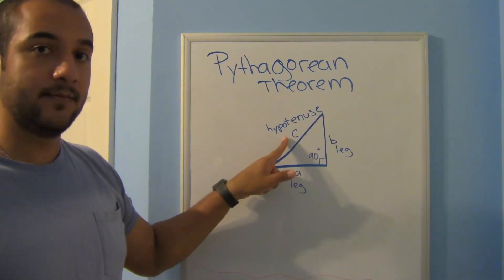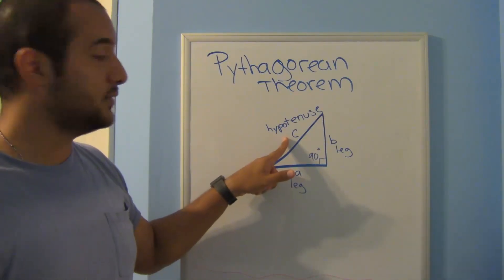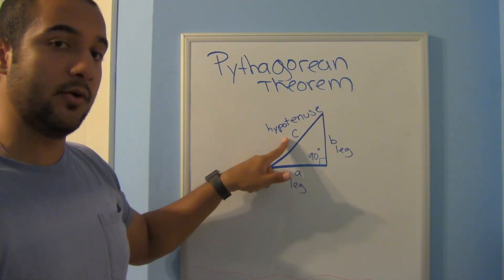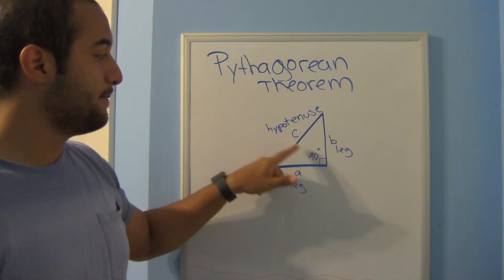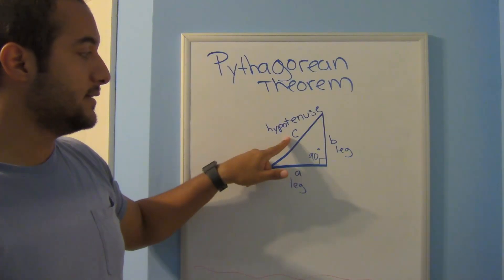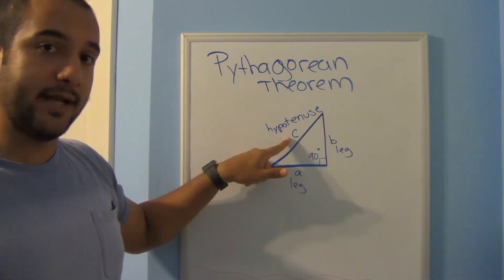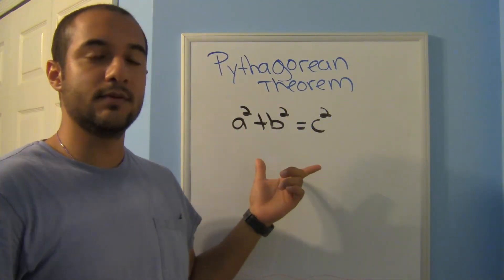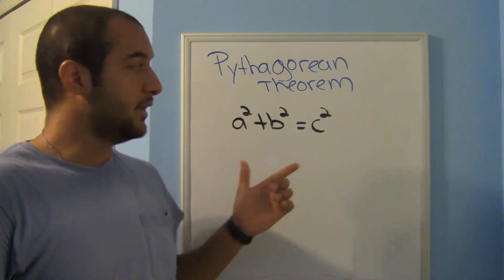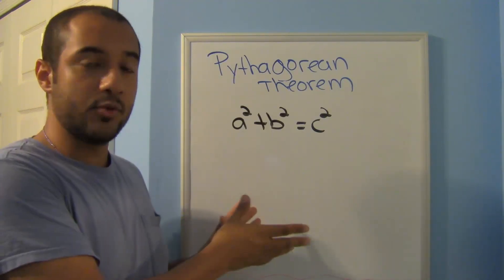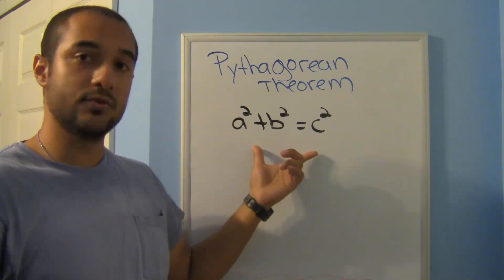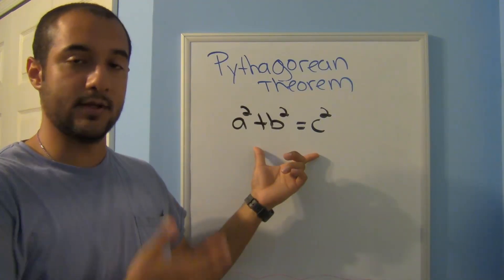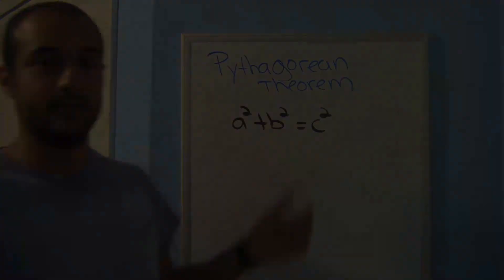The most important part is that you know your hypotenuse — usually denoted by C — is opposite the 90 degrees. This is the famous Pythagorean theorem. Let me show you a quick proof as to why we use this and why this works.